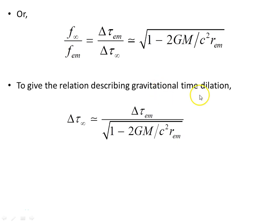To give the relation describing gravitational time dilation, we see that the observer far off records on their clock this interval of time, whereas at the emitter an observer measures this interval of time, and the relation between these two is given by this factor of 1 on the square root of 1 minus 2GM over c squared r at the emitter.